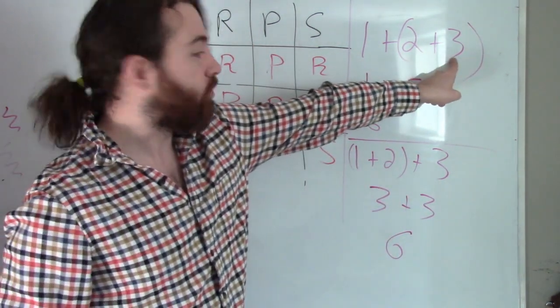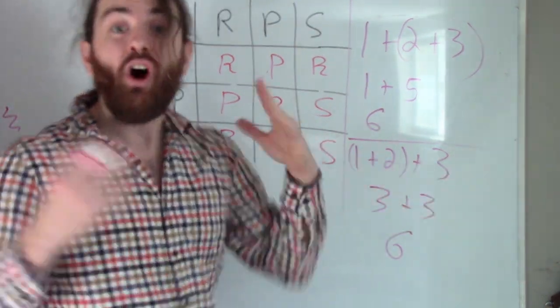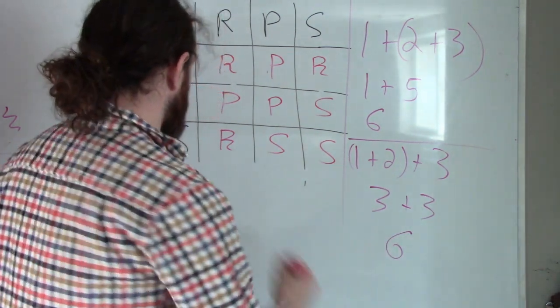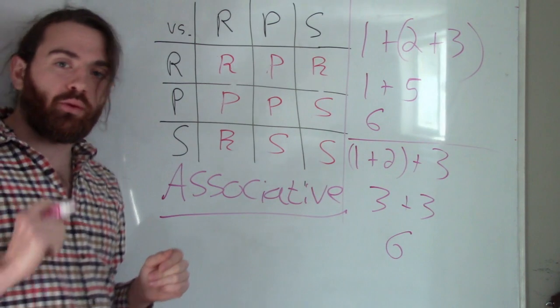In other words, one plus two plus three and one plus two plus three are the same thing. This is what it means to be associative. It just means that we can switch these parentheses around.